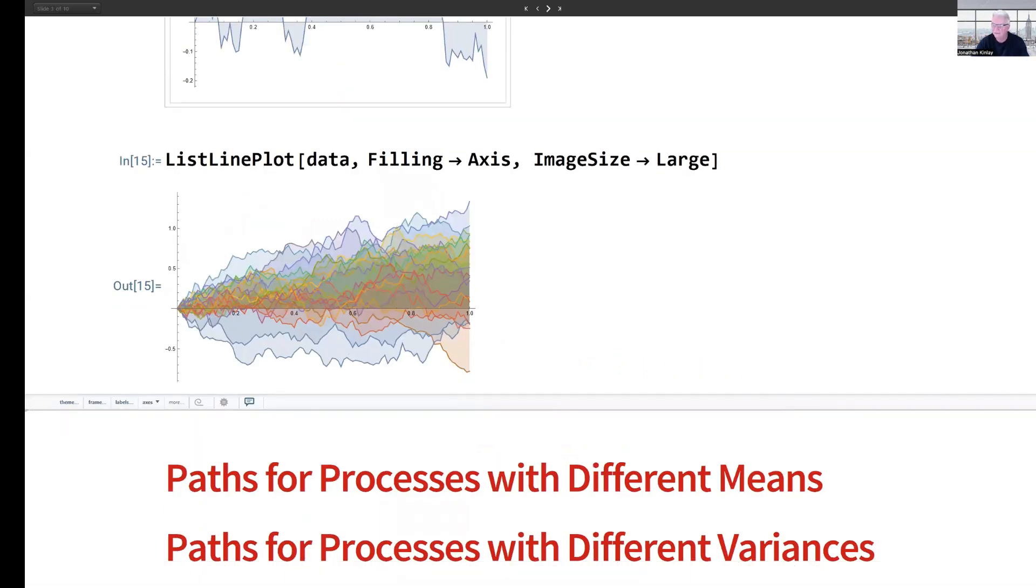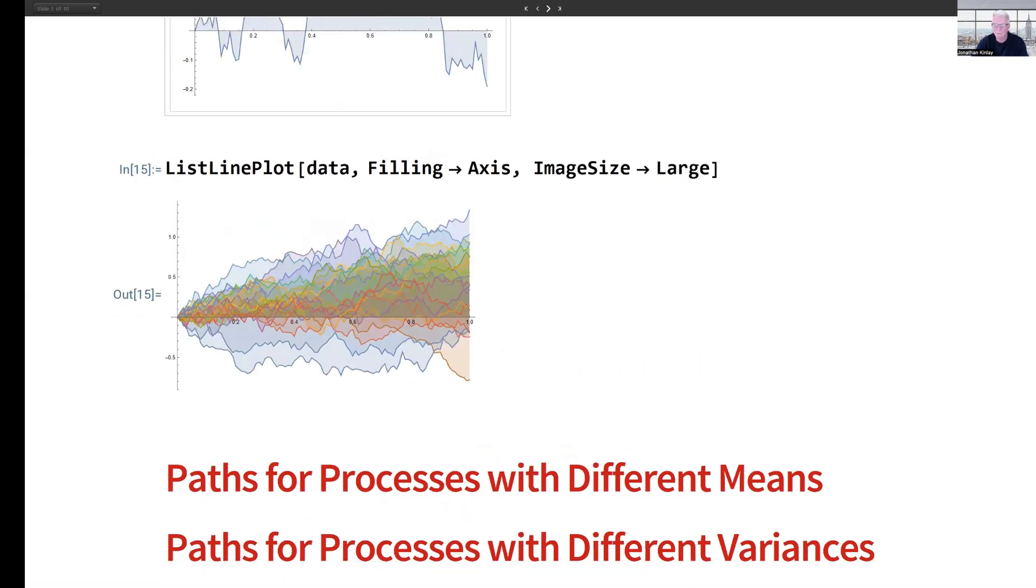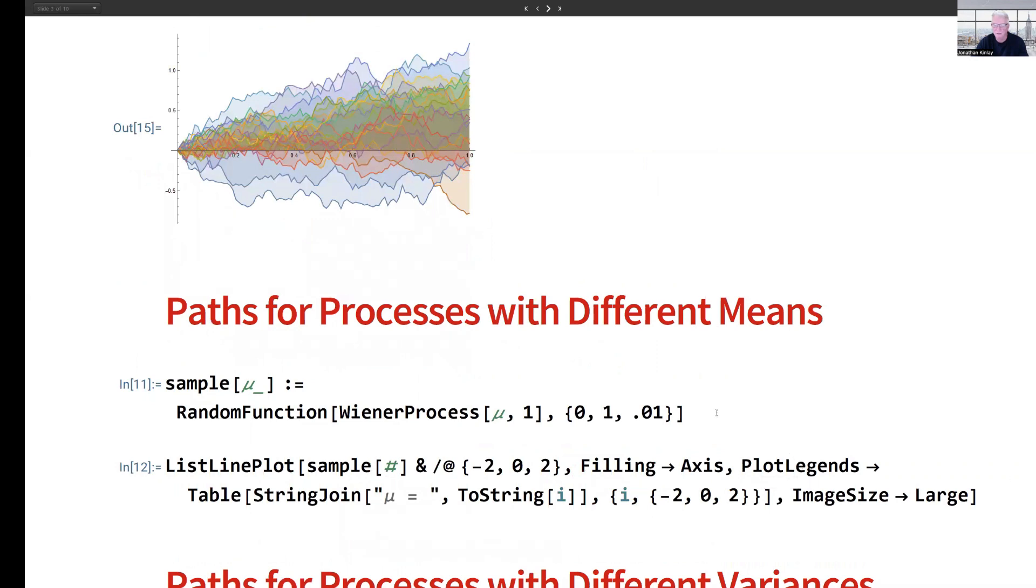Now let's look at sample paths for processes with different means. First of all, I'm going to define a function which creates a Wiener process with mean parameter mu, standard deviation of 1, and again we're going to look at it over the time interval from 0 to 1. Then what I'm going to do is look at sample paths for three different Wiener processes with parameter mu set to -2, 0, and +2.